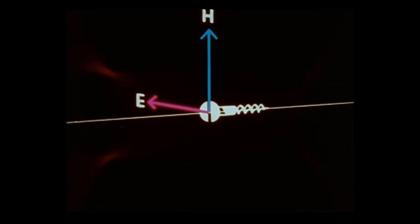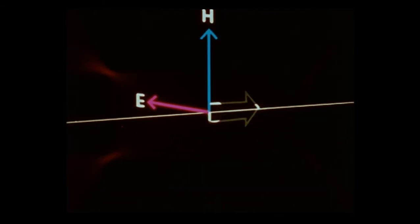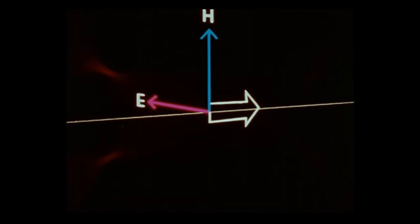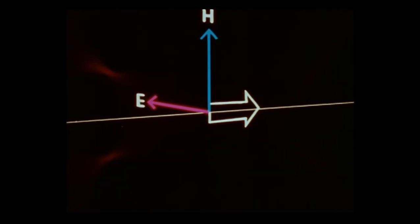If we turn from the E vector to the H vector through the shortest distance, the screw has advanced in the direction of propagation. This is known as Poynting's vector rule.